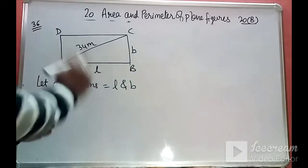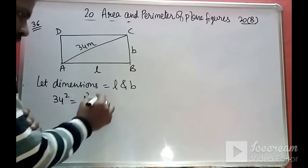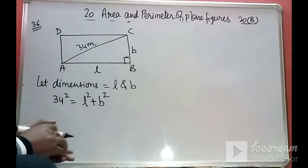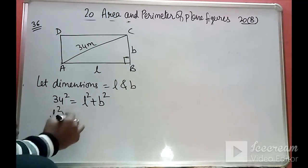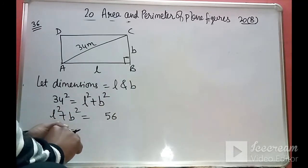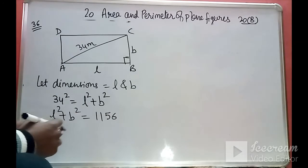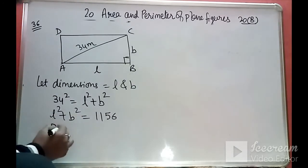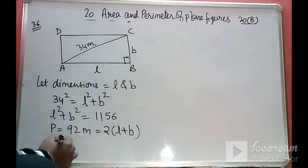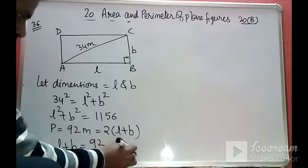Using the Pythagoras theorem: l squared plus b squared equals 34 squared, that is 1156. From the perimeter: 2(l plus b) equals 92, so l plus b equals 46 meters.